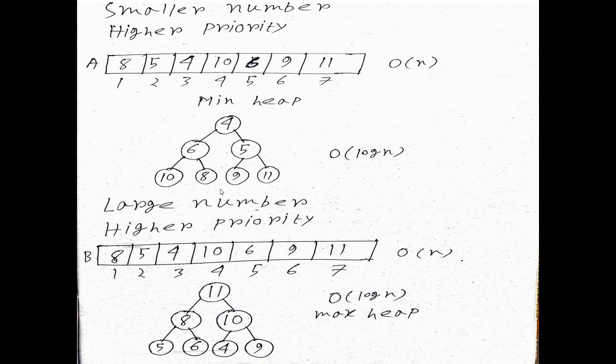This is the representation of the priority queue using heap. I think it is clear how you can represent the priority queue in data structure. Thanks for watching my video.